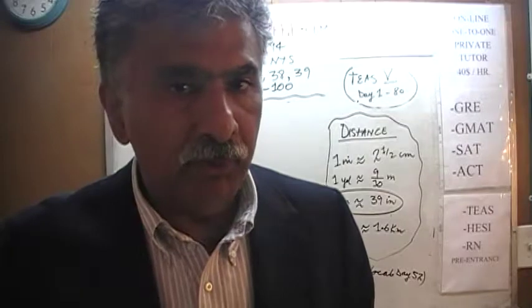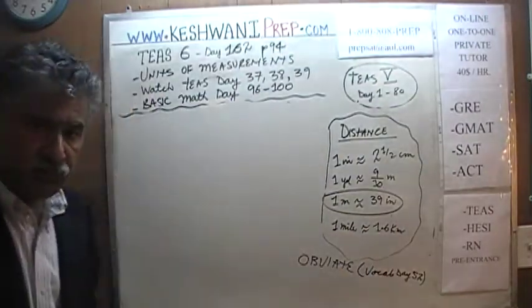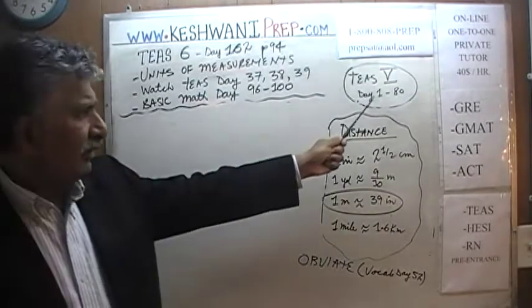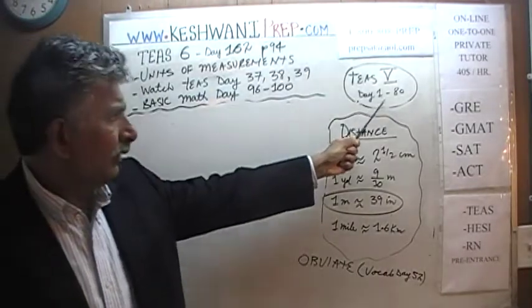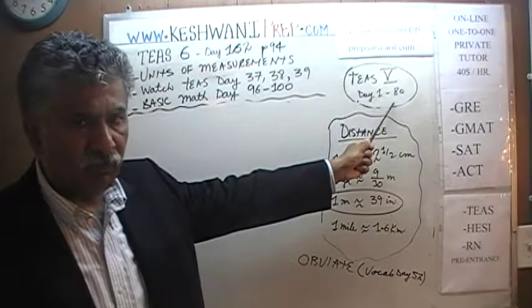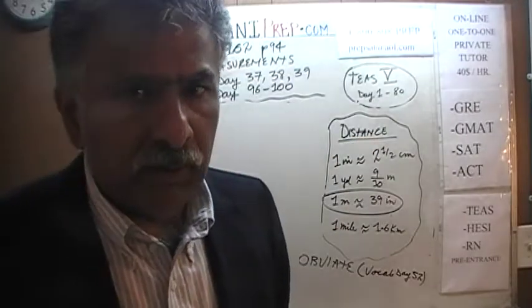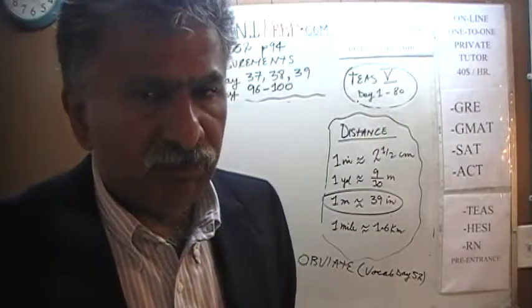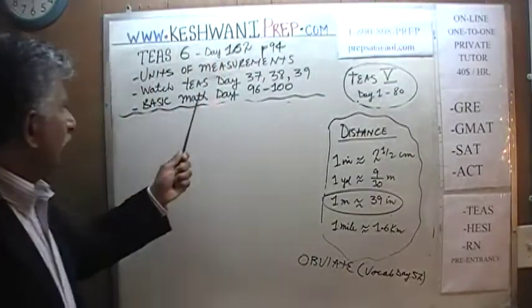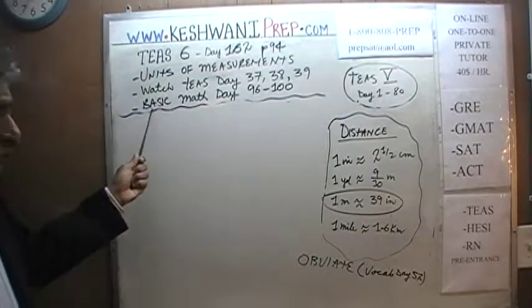English units are sometimes referred to as imperial units or standard units. If you're interested in getting more practice on this concept, you can watch the fifth edition of the TEAS series, which goes from day 1 through 80. The questions dealing with units of measurements in particular you will find on days 37, 38, and 39.